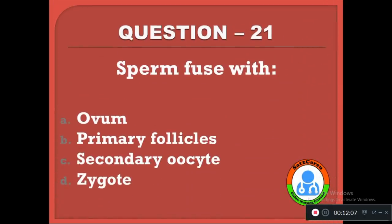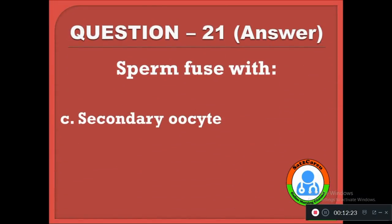Question 21: Sperm fuses with — option A: ovum, B: primary follicle, C: secondary oocyte, D: zygote. The correct answer is C, secondary oocyte.